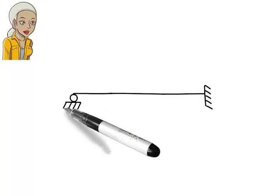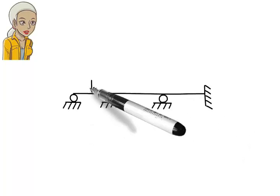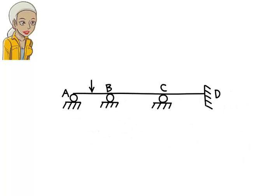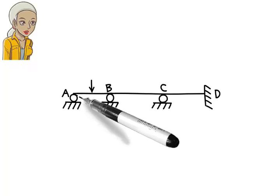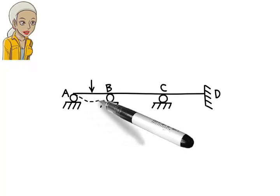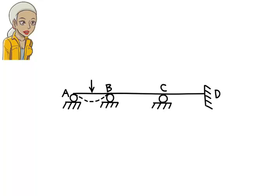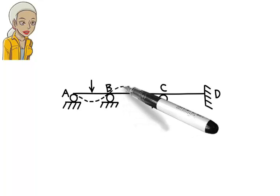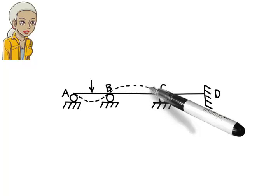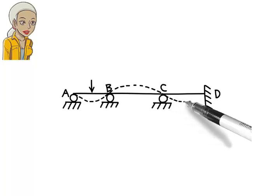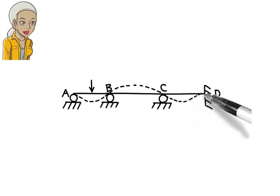This beam is similar to the beam in the previous example. Here, however, there is a fixed support at the right end of the beam. The beam deflects downward in segment AB with a clockwise rotation at A and a counterclockwise rotation at B. The rotation at B forces the beam to deflect upward in segment BC, which in turn causes the beam to rotate clockwise at C. Consequently, the beam deflects downward in segment CD with a zero rotation at D.